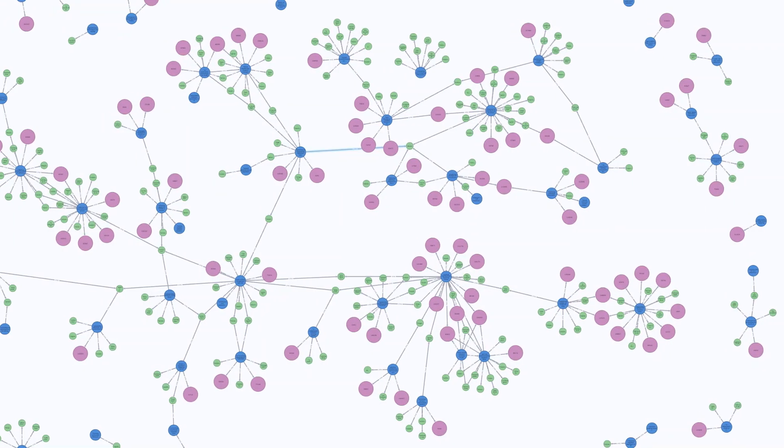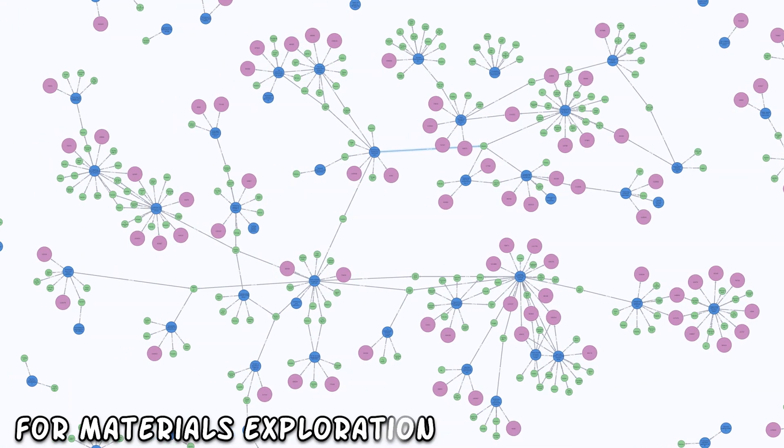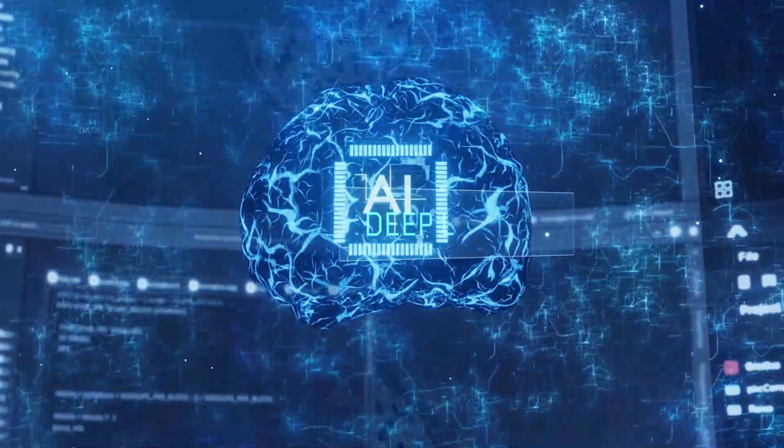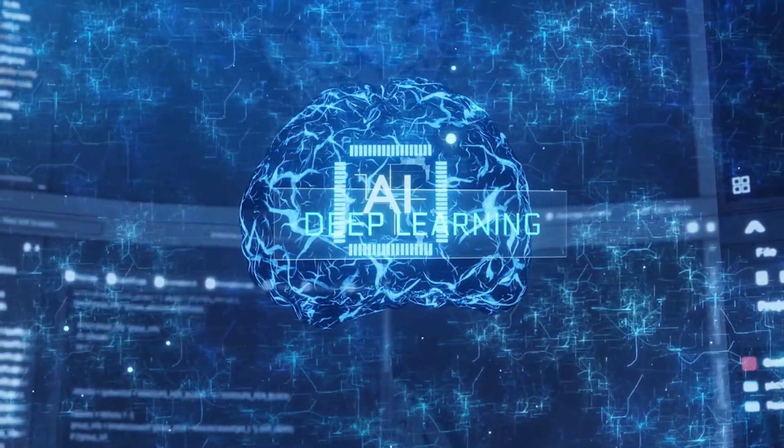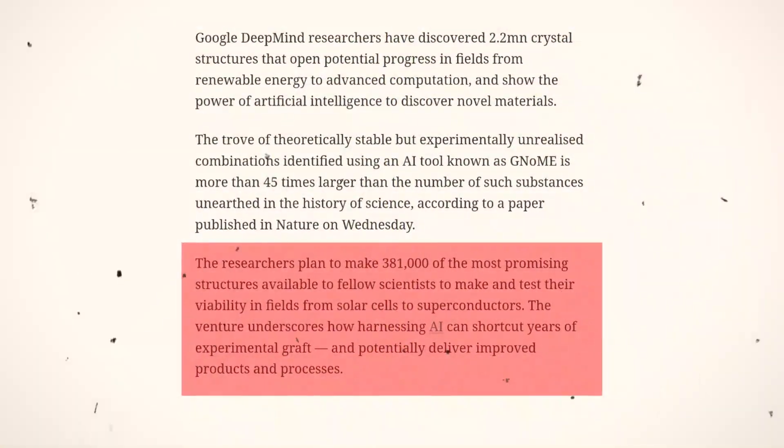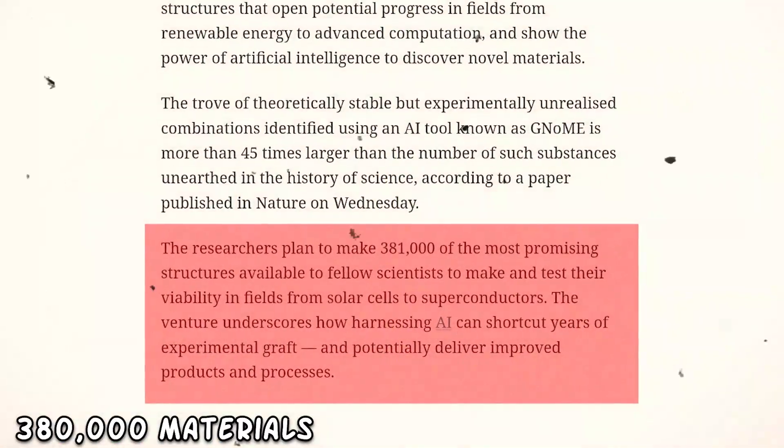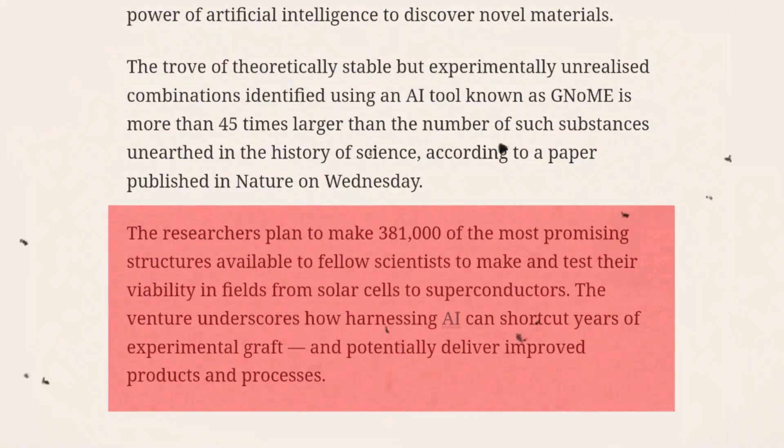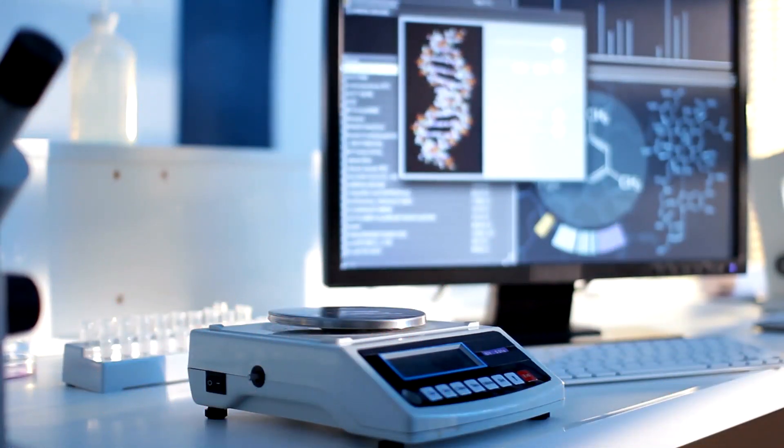Fueling this groundbreaking endeavor was graph networks for materials exploration, fondly dubbed GNOME, a deep learning tool fashioned to predict the stability of materials with uncanny accuracy. Within its treasure trove of predictions, 380,000 materials emerged as the vanguards of stability, poised to revolutionize future technologies.